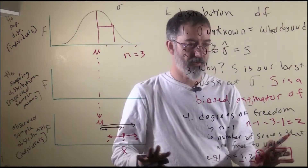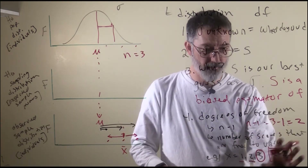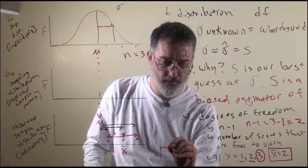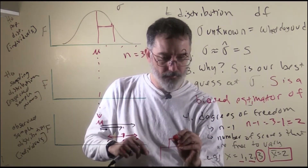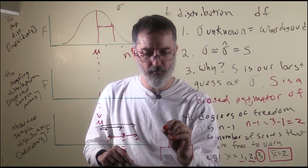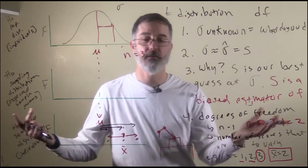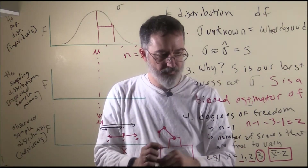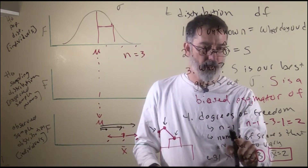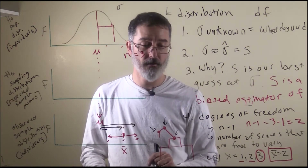Degrees of freedom appear in robotics with a similar meaning. Imagine a robot attached to a table with one movable point here, a joint here, and one more joint, with a laser at the bottom. That robot has three locations that are free to vary, so it has three degrees of freedom — which is how roboticists would describe it.